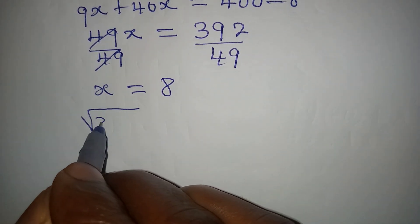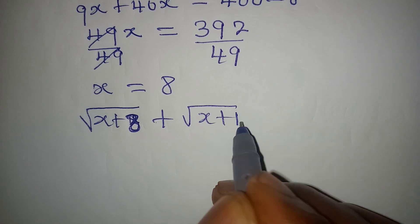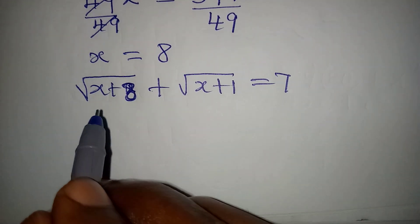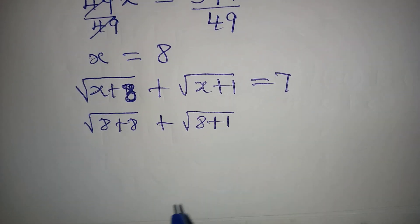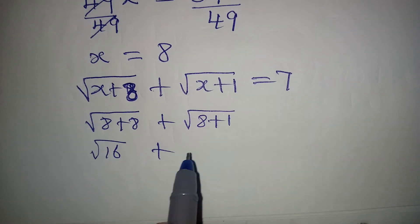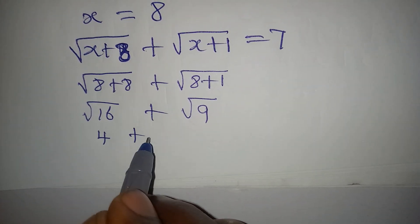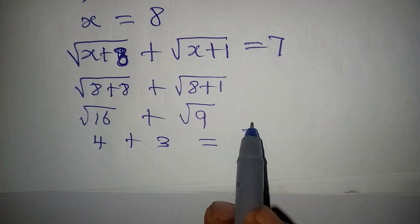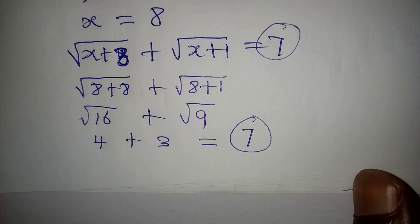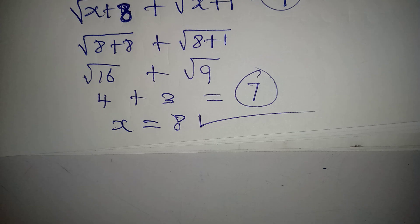Let's verify with the original equation: square root of (x + 8) plus square root of (x + 1) equals 7. Substituting x = 8: square root of (8 + 8) plus square root of (8 + 1) equals square root of 16 plus square root of 9, which is 4 plus 3, and that is definitely 7. We confirm x equals 8. Thank you for watching — please subscribe to this channel and keep learning.